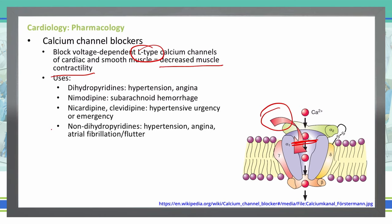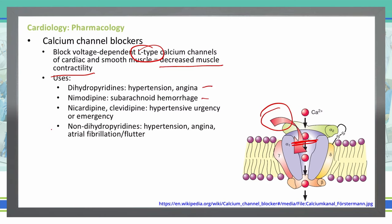For the dihydropyridines, we use them in hypertension and in angina. Nimodipine is specifically useful in subarachnoid hemorrhages. Nicardipine and clevidipine are used during hypertensive urgency and emergency situations.